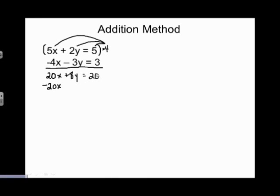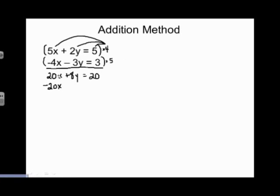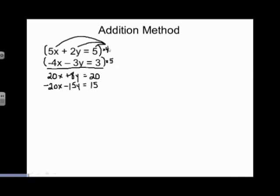This new equation and the original first equation are exactly the same — they'd be identical lines if graphed, just written with different numbers. Now for the second equation: what do I multiply negative 4 by to get negative 20? Multiply by positive 5. So negative 4 times 5 is negative 20x, negative 3 times 5 is negative 15y, and 3 times 5 is 15. The new second equation is negative 20x minus 15y equals 15.